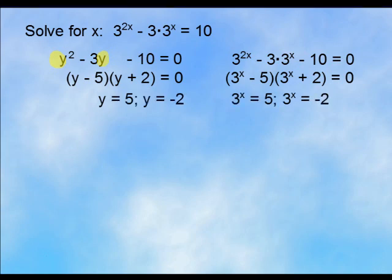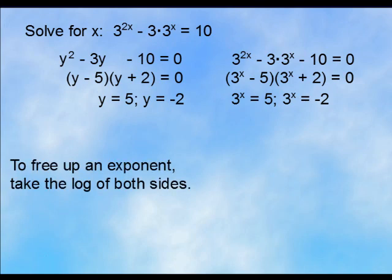Now you can do it either way, whatever makes it more easy for you to complete the problem. Just remember that at the end, after we would use zero product rule and get y = 5 and y = -2, you need to replace back the 3^x because we're not finished. Remember we're solving for x here, not just for y. So what do we do? Since x is an exponent, what you want to do is you want to free up that exponent, and the way you do that is to take the log of both sides of the equation.